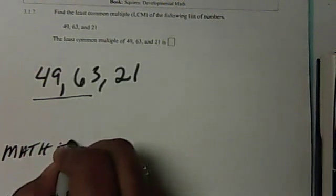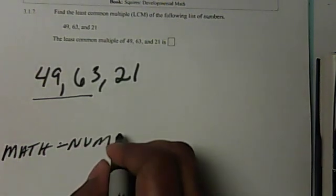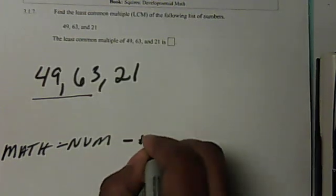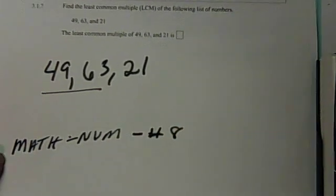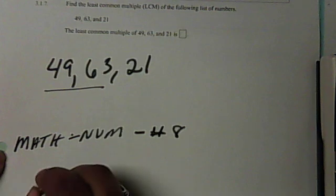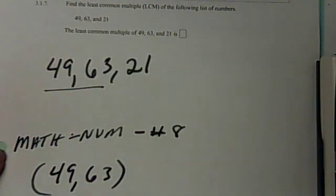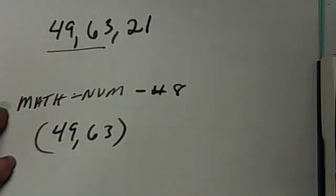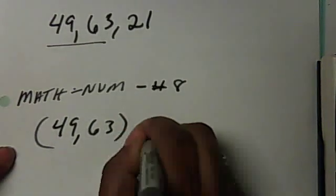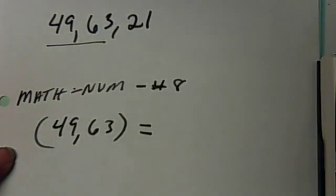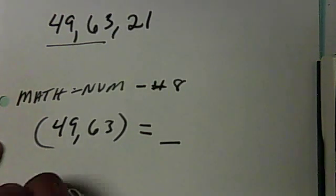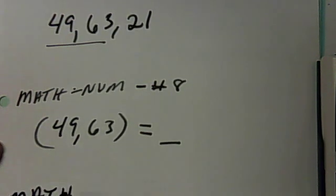So you're going to work it as you normally did. You're going to hit math, then you're going to go over to num, and then you're going to go down to number 8, like you did before, and you're going to put in your 49 comma, your 63. Once you do that, it's going to give you some answer. Once you get that answer, the next step is to go back into math.